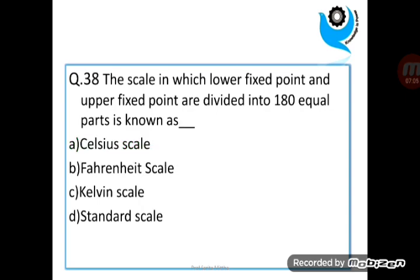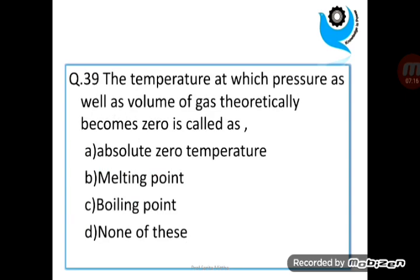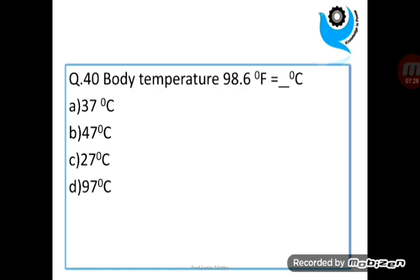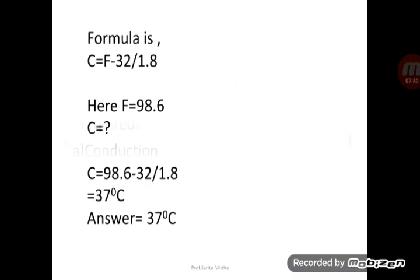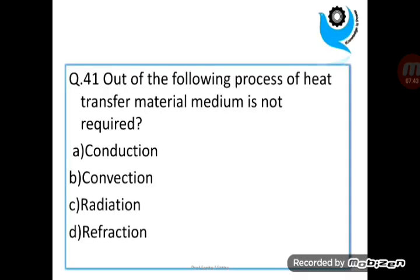Question 38. Question 39: The temperature at which pressure as well as volume of gas theoretically becomes 0 is called as? Question 40: Body temperature at 98.6 degree Fahrenheit is equal to 37 degree Celsius. Question 41: Out of the following processes of heat transfer, which medium is not required?